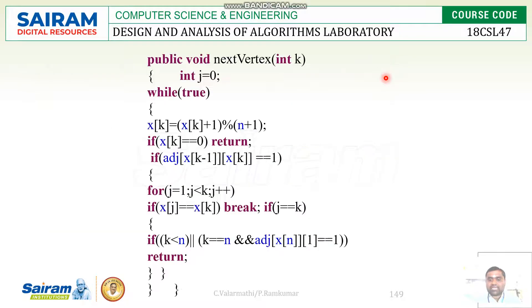Then public void nextVertex. nextVertex of int k, which means that, as I said before, first we have to start at one place, then we have to identify the adjacency vertices of a starting vertex.